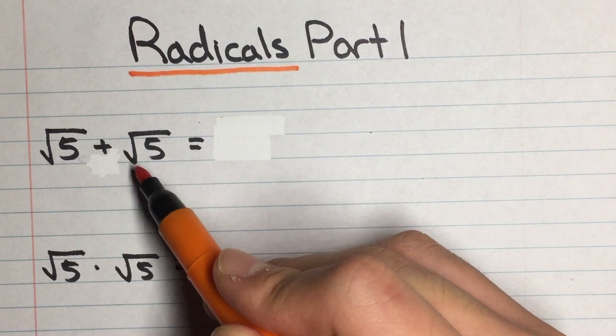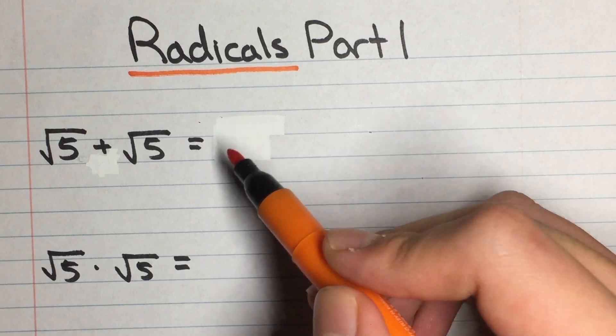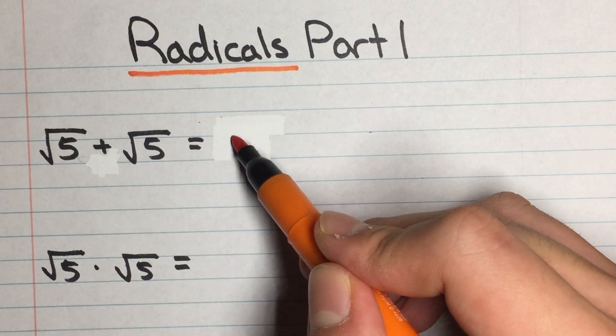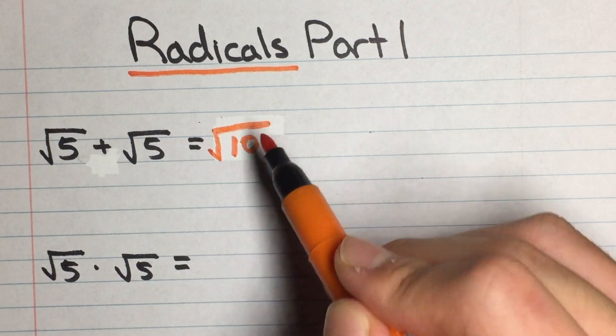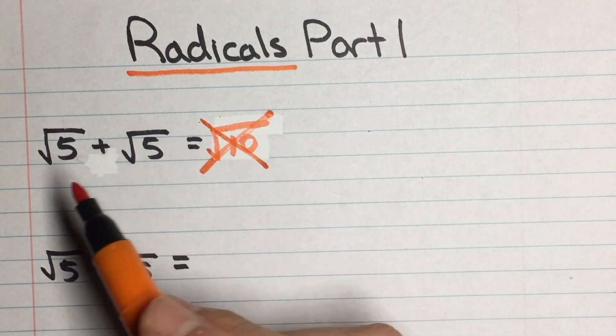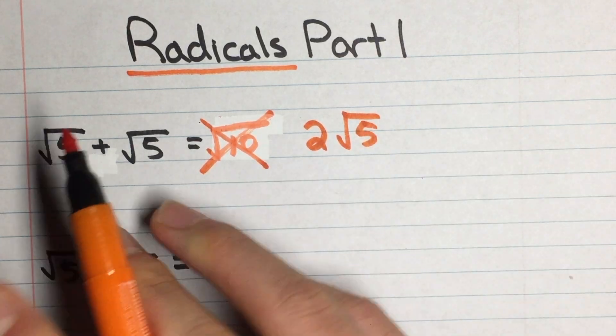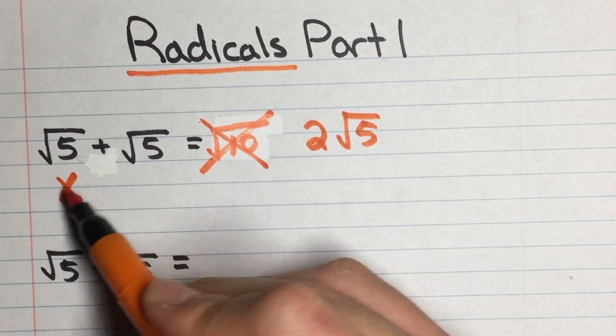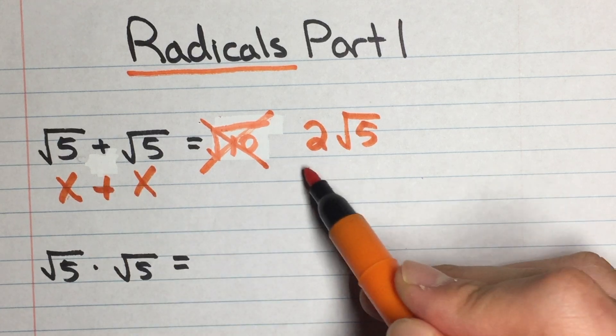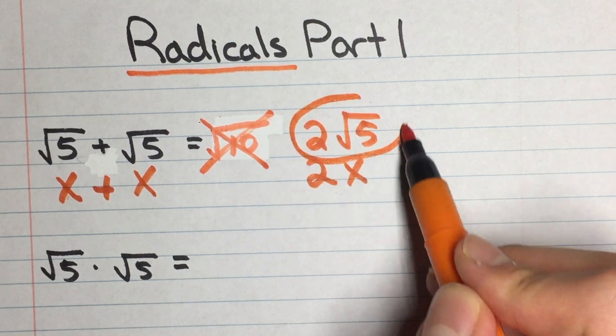We have root 5 plus root 5 over here. What we cannot do is just do 5 plus 5 gives us 10 and put it under a root. We cannot do that. So when we have two of these that are the same, we just write 2 root 5 because it's kind of like there's two of them. You can think of each one as x and then when you add them up, you get 2x. So this is the right answer.